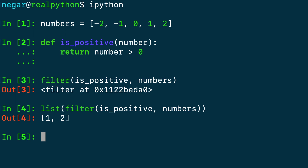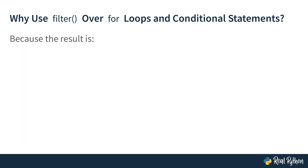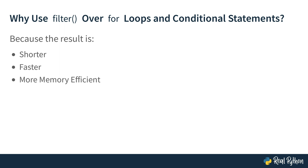Now, you might be wondering: why would you use the filter function instead of good old for loops and conditional statements? Well, because the result is shorter — the filter function can be expressed in a single line of code and the syntax is pretty intuitive. The result produced by filter is also faster, because filter is written in C and is highly optimized, and its internal implicit loop can be more efficient than a regular for loop regarding execution time. This efficiency is arguably the most important advantage. The result is also more memory efficient — the filter function returns an iterator, which means it only stores elements in memory as they're needed.